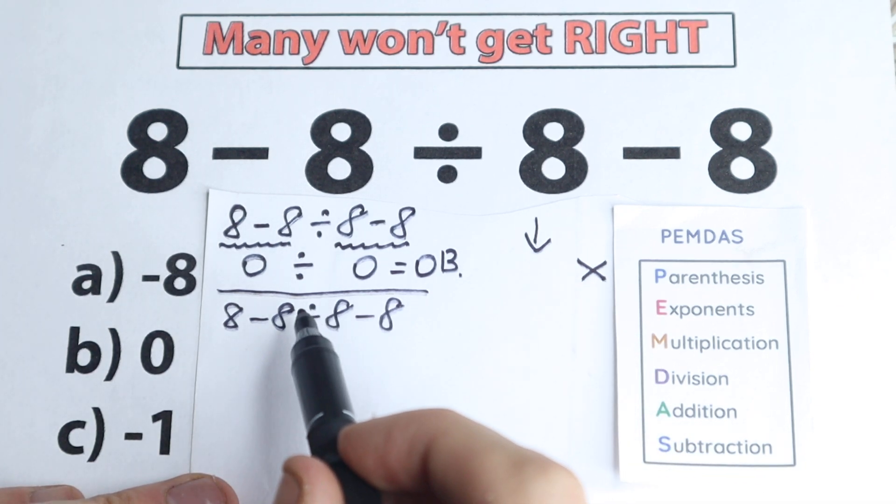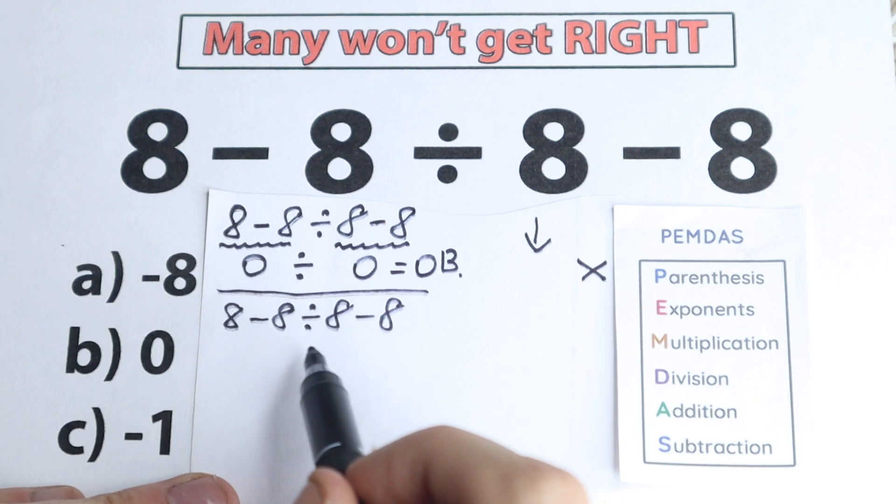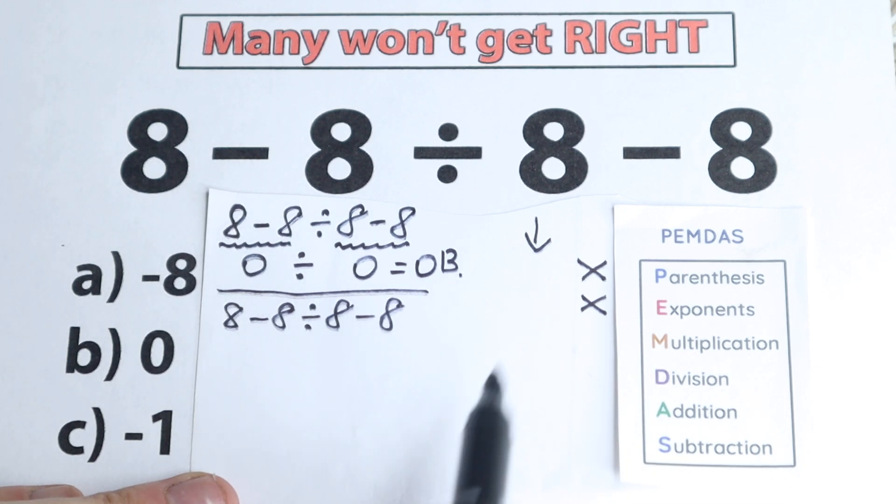Exponents, what about exponents right here? Cubes, squares, no I don't see any of those, we don't have any exponents right here. And it's really great, so we skip this part as well. So we don't have parentheses, we don't have exponents.